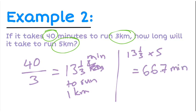So if it takes 40 minutes to run 3 kilometers at the same speed, using proportional reasoning, it will take 66.7 minutes to run 5 kilometers.